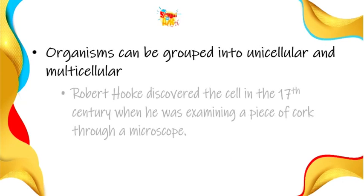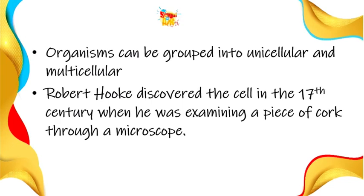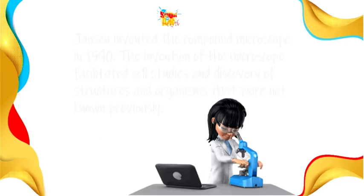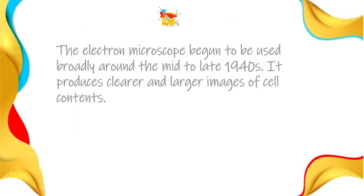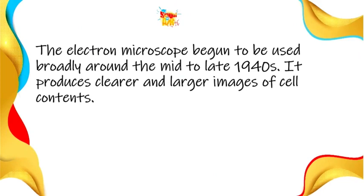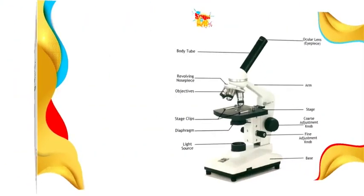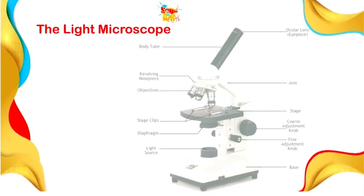Organisms can be grouped into unicellular, having just one cell, and multicellular, having many cells. We as human beings are multicellular, but lower organisms such as bacteria are unicellular. Robert Hooke discovered the cell in the 17th century when he was examining a piece of cork through a microscope. Jensen invented the compound microscope in 1590s. The invention of the microscope facilitated cell studies and discovery of structures and organisms not known previously. The electron microscope began to be used broadly around the mid to late 1940s, producing clearer and larger images of cell content.